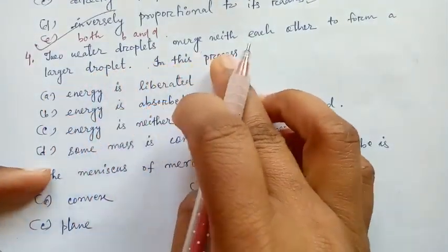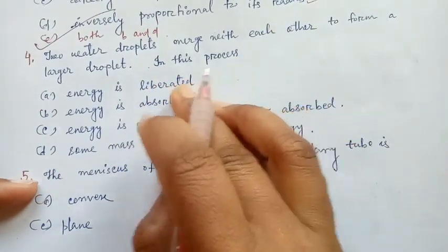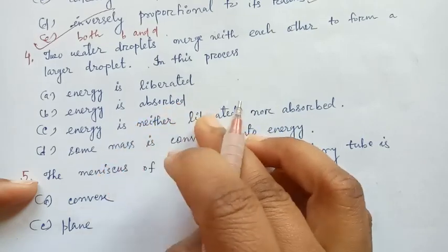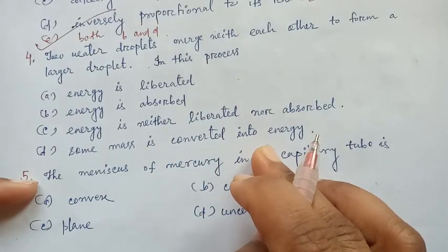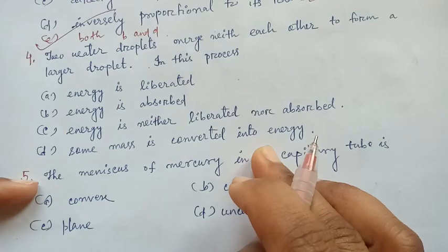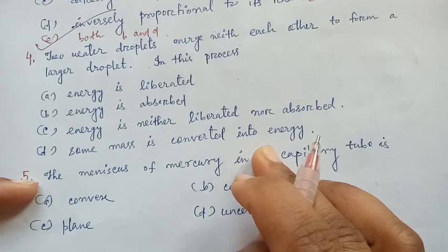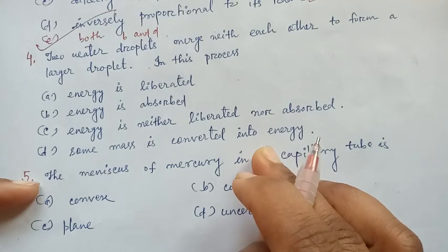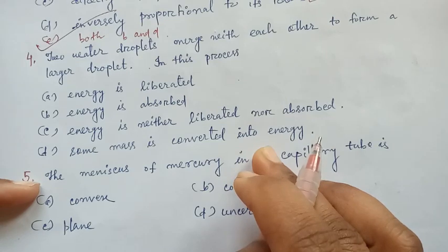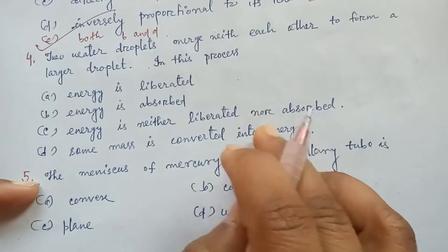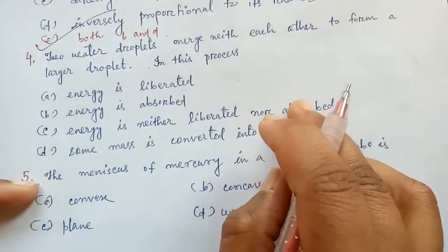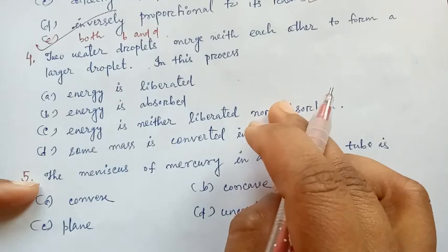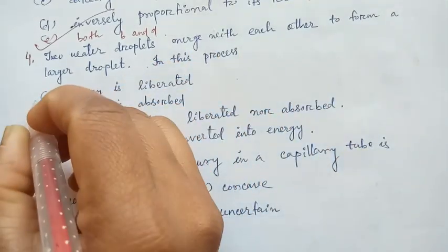Next: two water droplets merge with each other to form a larger droplet. In this process, energy is liberated, energy is absorbed, energy is neither liberated nor absorbed, or some mass is converted into energy. When two water droplets merge to form a single drop, the surface area of the larger drop decreases, so the energy of the bigger drop is less than the sum of the energies of the two smaller drops. Therefore energy is released — option A, energy is liberated.